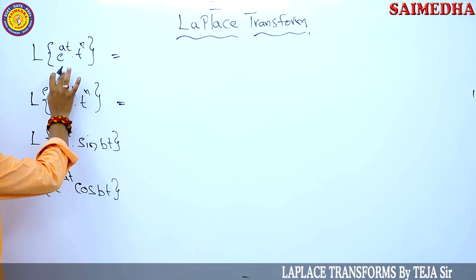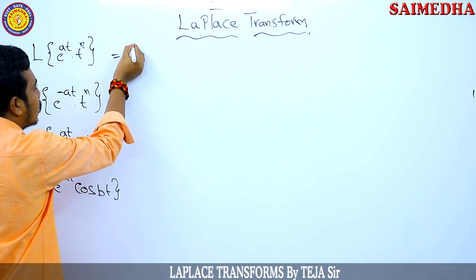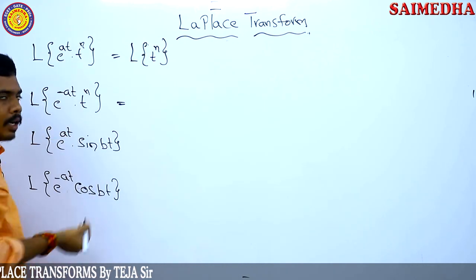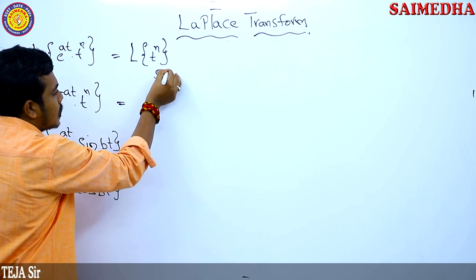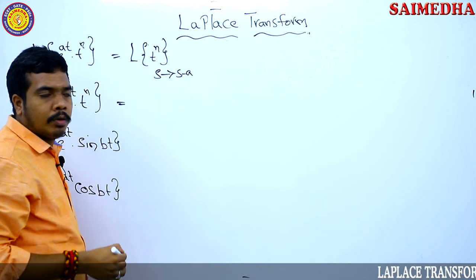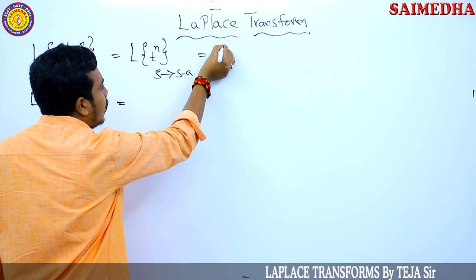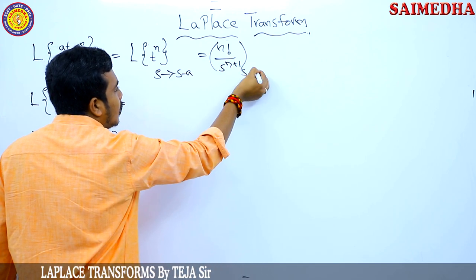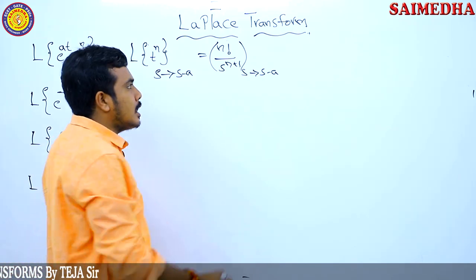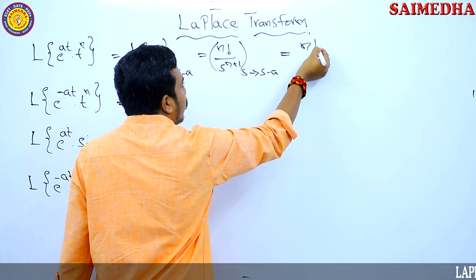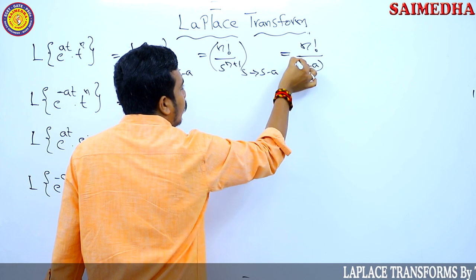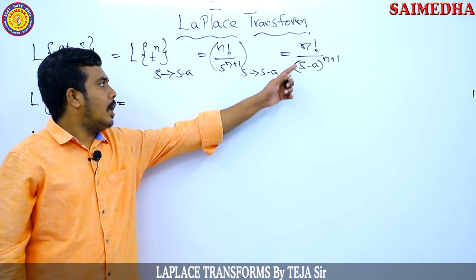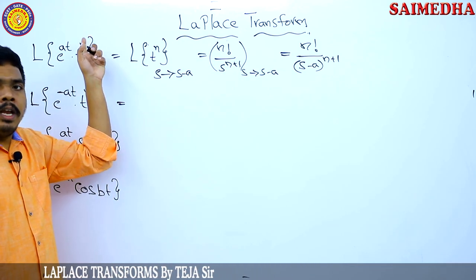The statement is: e^(at) into t^n — we will find its Laplace transform. If you have the Laplace transform of t^n, which is n! divided by s^(n+1), by replacing s with s minus a, you get the Laplace transform of e^(at) into t^n as n! divided by (s minus a)^(n+1).